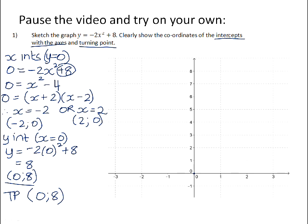If we plot that point, then plot our x-intercepts at negative 2 and positive 2, and join the three points with a smooth curve, remember to put arrows on the end and label your curve. We'll label it y equals negative 2x squared plus 8.